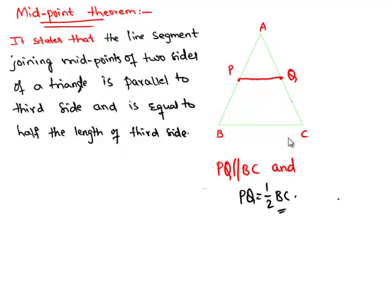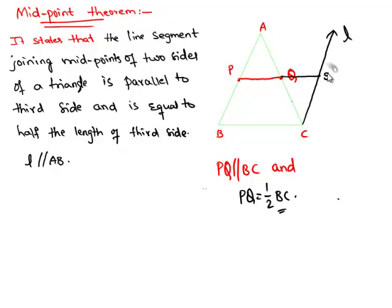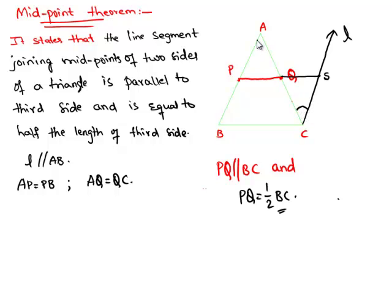To get this solution, we draw a line parallel to AB through C. We extend Q to meet line L at S. Here we know that P is the midpoint, so AP is equal to PB. Similarly, Q is the midpoint of side AC, so AQ is equal to QC. From the properties of a transversal, since AB and L are parallel lines and AC is a transversal, alternate angles must be equal.